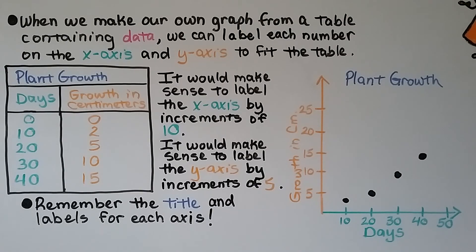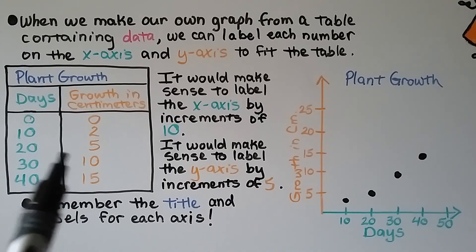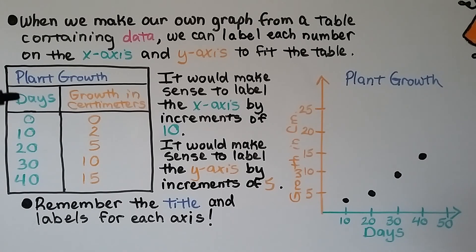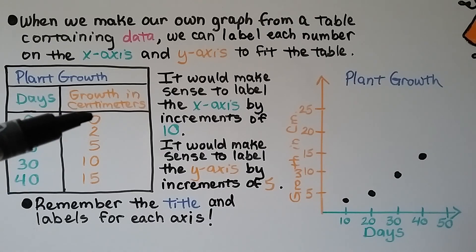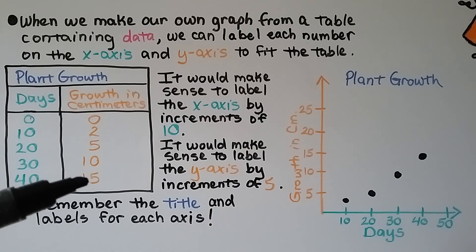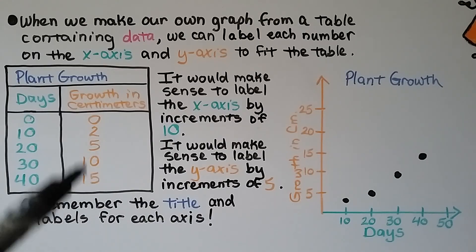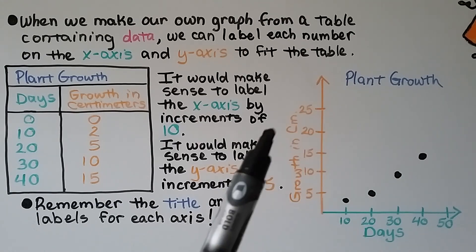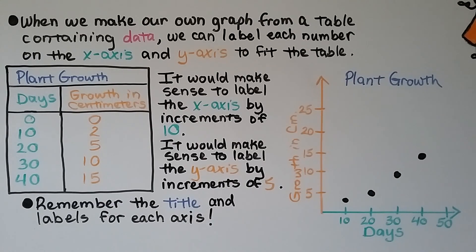When we make our own graph from a table containing data, we can label each number on the x-axis and y-axis to fit the table. This table has plant growth in days going 10, 20, 30, 40, so it makes sense to label the x-axis in increments of 10. For the growth in centimeters, it goes from 0 to 2, then 5, 10, 15, so it makes sense to label the y-axis in increments of 5. Remember to include titles and labels for the graph and each axis.